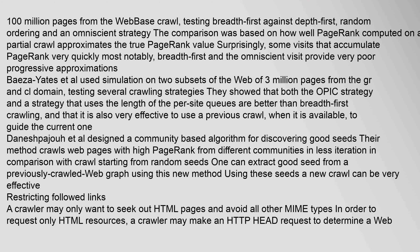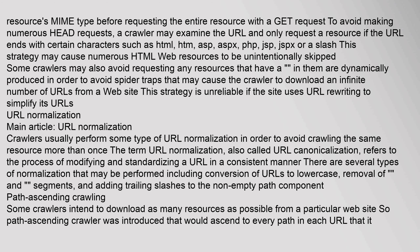A crawler may only want to seek out HTML pages and avoid all other MIME types. To request only HTML resources, a crawler may make an HTTP HEAD request to determine a web resource's MIME type before requesting the entire resource with a GET request. To avoid numerous HEAD requests, a crawler may examine the URL and only request a resource if the URL ends with certain characters such as .htm, .asp, .php, .jsp, or a slash. Some crawlers may also avoid requesting any resources that have a question mark in them — dynamically produced — in order to avoid spider traps that may cause the crawler to download an infinite number of URLs from a website.